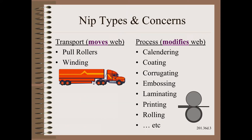Part of what I mean by involved is that NIPs are involved in a couple of web handling concerns, such as many pull rollers and winders. However, I am even more concerned about the many web processes that are done by NIPs — things like calendaring, coating, laminating, printing, and many other converting operations that require a NIP.